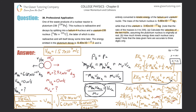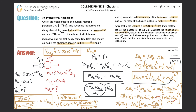Now I can find the velocity of uranium using the momentum equation, since I just found the helium velocity. Anytime you take the square root of a value, it can be positive or negative. Thinking about the picture, this velocity must be negative because I chose the helium atom to move to the left — otherwise the directions won't make sense. I'd have the right magnitudes but not the right directions.